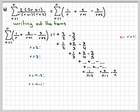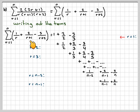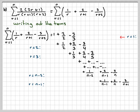When r=n-1, lining up the columns, we get 1/(n-1) + 2/n - 3/(n+1), because it's (n-1)+2 = n+1. And finally for the last term when r=n, we get 1/n + 2/(n+1) - 3/(n+2).